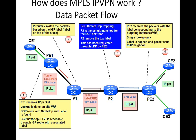Once it reaches PE2, the fourth process mentioned here, he knows what VPN the packet represents. So he's going to strip off the VPN label and send the IP packet to CE2, because CE2 is the only device connected to the VPN customer, which is CE1. So this is basically how the data packet flows.